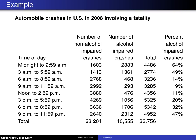Here's an example that will help develop a little bit of intuition about bivariate random variables. The table below gives you the automobile crashes in the United States in 2008 that involve a fatality. So not all crashes, but just those where the loss of life occurred.